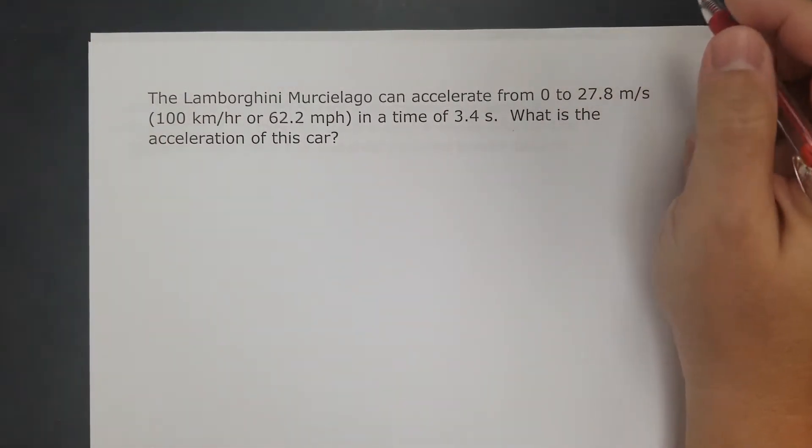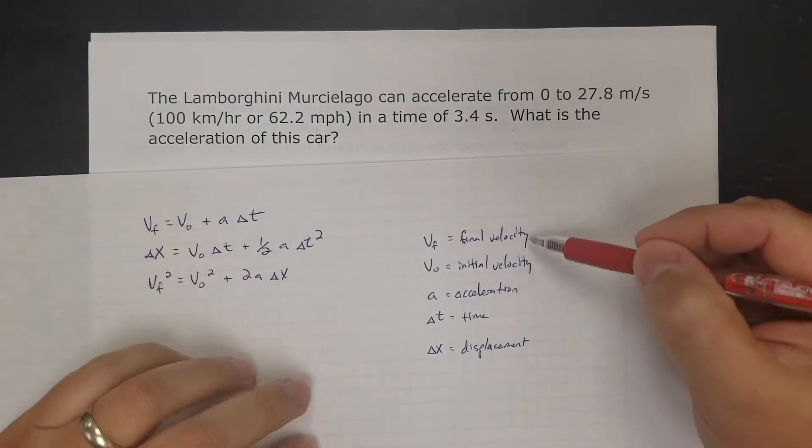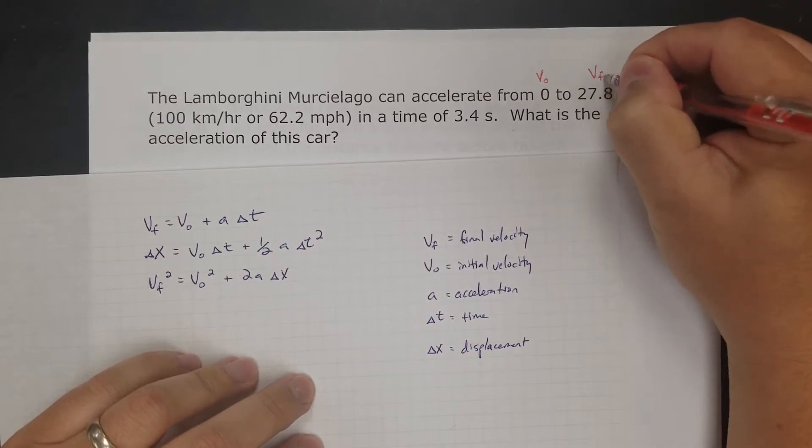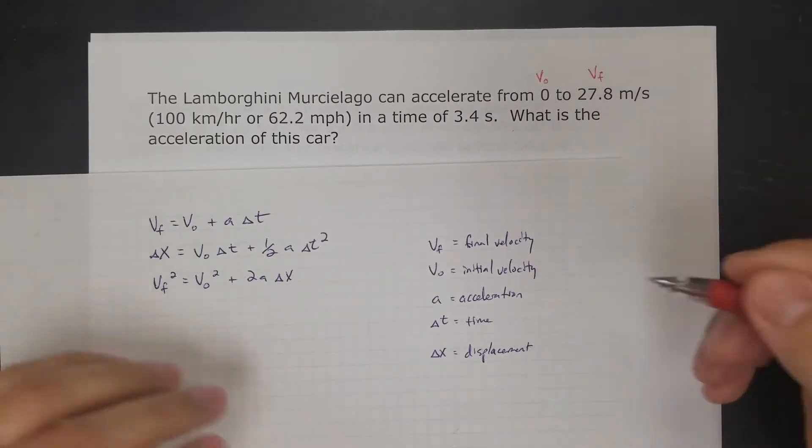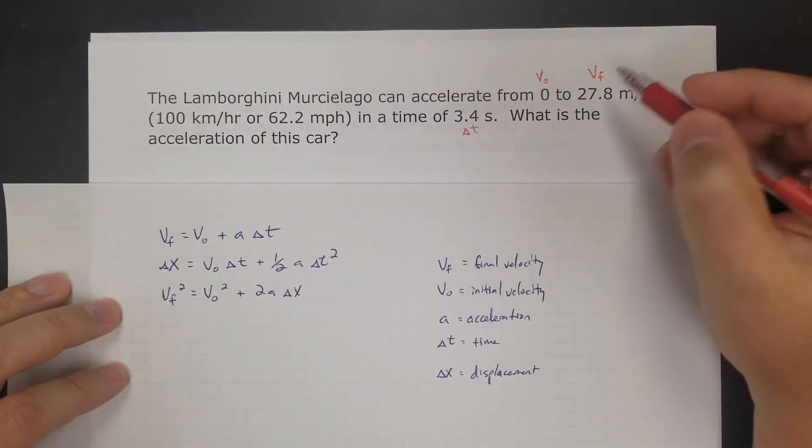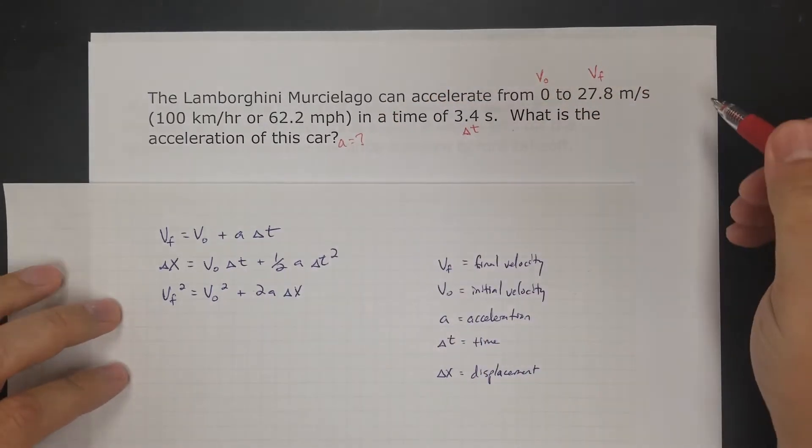0 and 27.8 are my velocities. 0 is going to be my initial velocity, 27.8 is going to be my final velocity, in a time of 3.4 seconds. That's the time interval. What's the acceleration of the car? The acceleration is what we don't know.